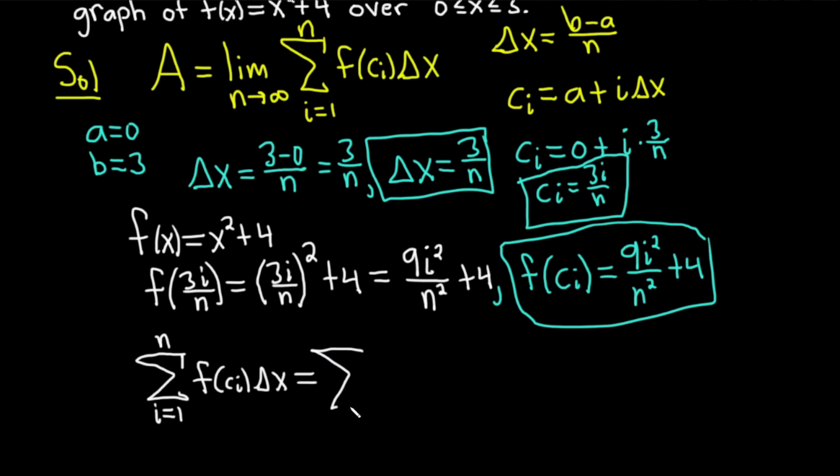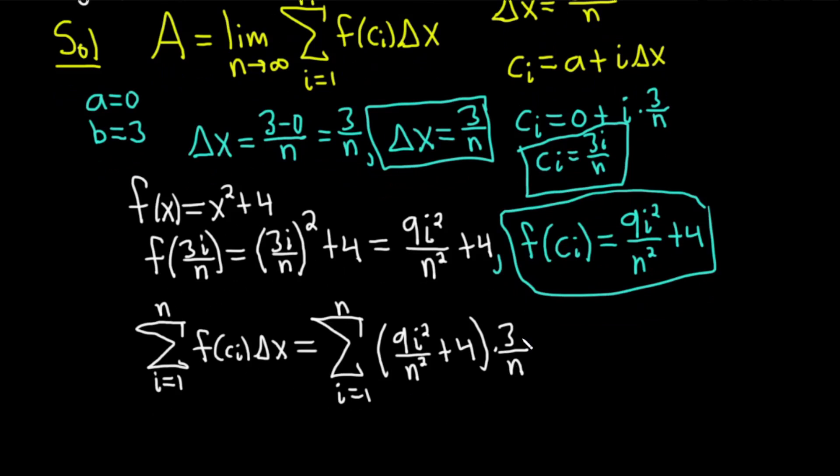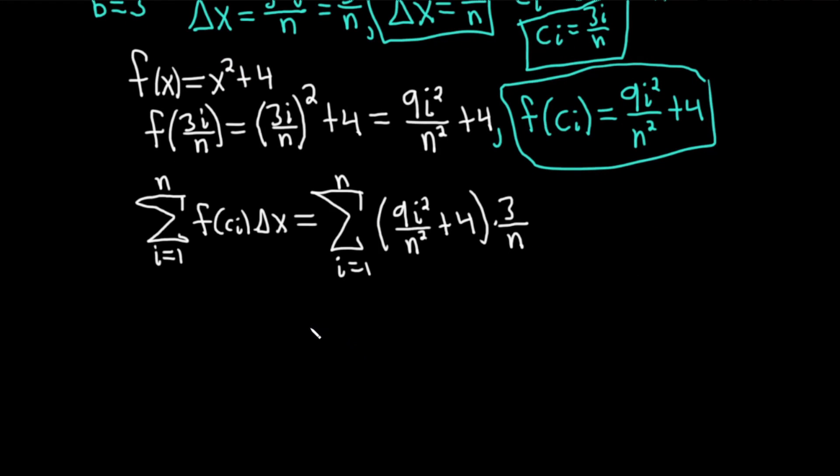And then f(c_i), we have that. That's 9i²/n² + 4, in parentheses. And then Δx, oh look, it's in a box. So that's why it's good to have things in boxes because you can find them. This is a lot of work. And now we're going to distribute the 3/n through to both terms. So this equals the finite sum as i runs from 1 to n. Just distribute the 3/n. So 3 times 9 is 27, and we still have the i² in the numerator over n times n² which is n³. Plus 4 times 3 is 12. Then we have the n down here.